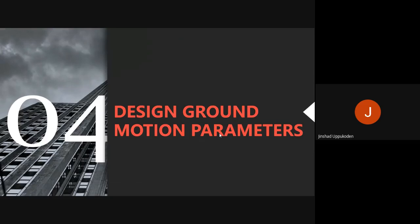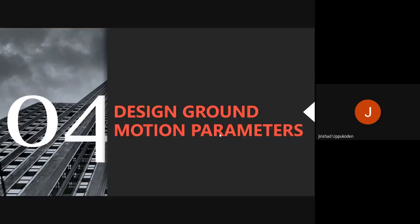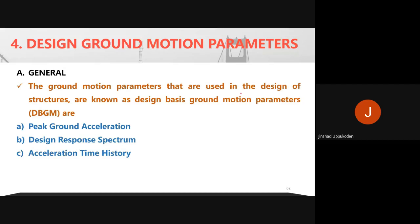To wrap up: the design ground motion parameters used in the design of structures are three: peak ground acceleration (PGA), the design response spectrum, and the acceleration time history. These are the general ground motion parameters used for the design part, which we will discuss further when we study the code.